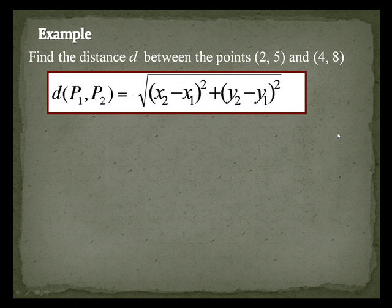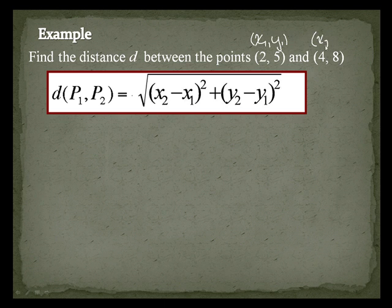Let's look at an example. Find the distance d between the points (2, 5) and (4, 8). Here's my distance formula. Before I start, I like to label x₁, y₁ for my first point, and x₂, y₂ for my second point. It's just easier and it saves me from being confused about which is which.